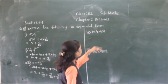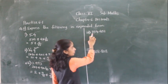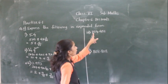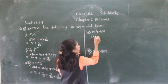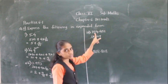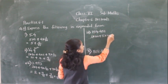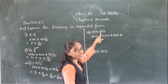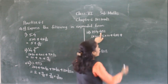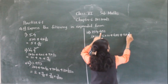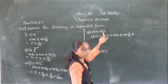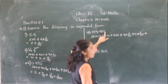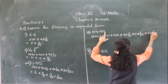Now let's see the next question: 154.451. 1 is at the hundreds place, so 1 into 100. Plus 5 is at the tens place, so 5 into 10. Plus 4 is at the ones place, so 4 into 1. Plus this 4 is at the tenths place, so 4 into 1 upon 10. Plus 5 is at the hundredths place, so 5 into 1 upon 100. And 1 is at the thousandths place, so 1 into 1 upon 1000.